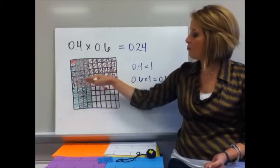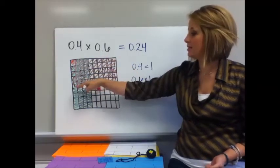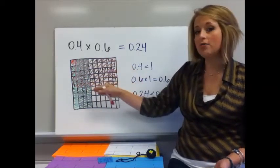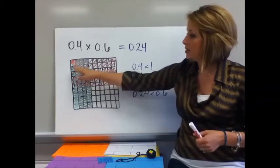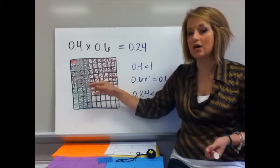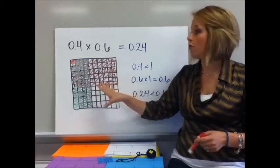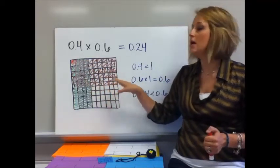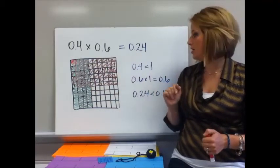And then for the rows, I did 6 tenths in red. Where they overlap is your answer. So I have 1, 2, 3, 4 across and 1, 2, 3, 4, 5, 6 down. 4 times 6 is 24. And remember, there are 100 of these, so it's 24 hundredths.